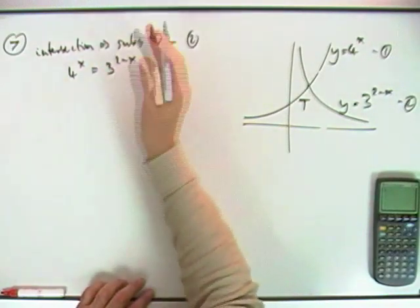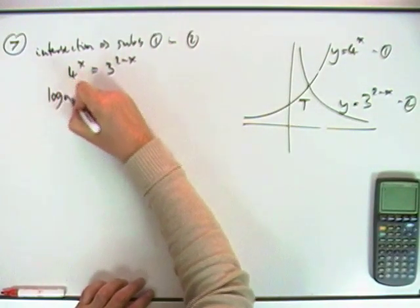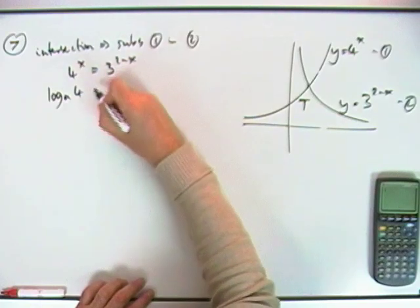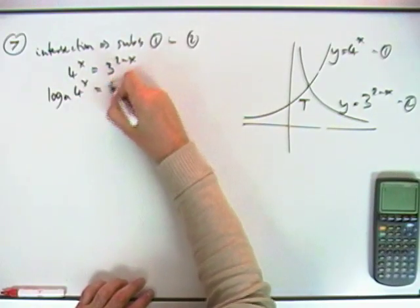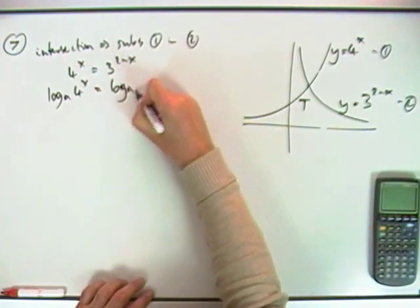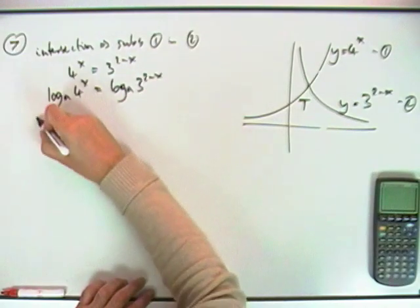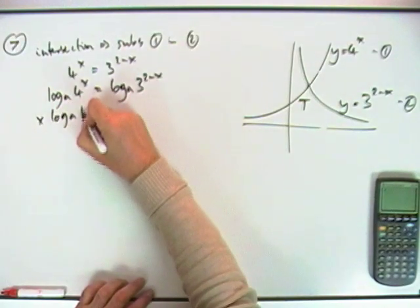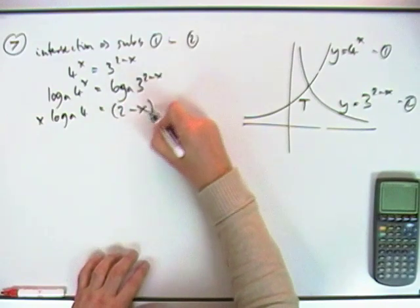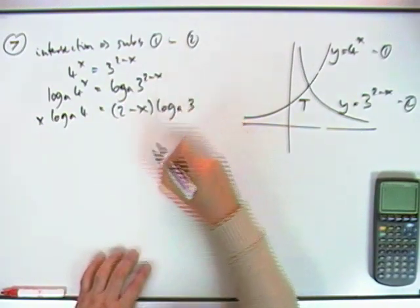Take the logs of both sides. You can take any log you like, but it seems to suggest you just call that A, just to keep it any number. So I've got log A of that is log A of that. I'll pop out the powers, so I've got x log A of 4 equals 2 minus x log A of 3.